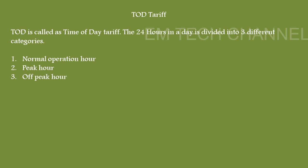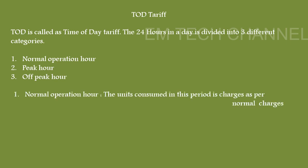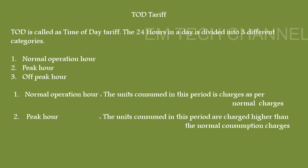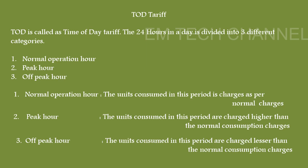This type is called TOD tariff. This is a special type of tariff levied on consumers based upon the time zones in which they are consuming energy. TOD stands for Time of Day tariff. In this, the 24 hours in a day are divided into three different categories: normal operation hour, peak hour, and off-peak hour. Normal operation is where units consumed are charged at normal tariff rates, peak hour units are charged higher, and off-peak hour units are charged lesser than normal consumption charges.